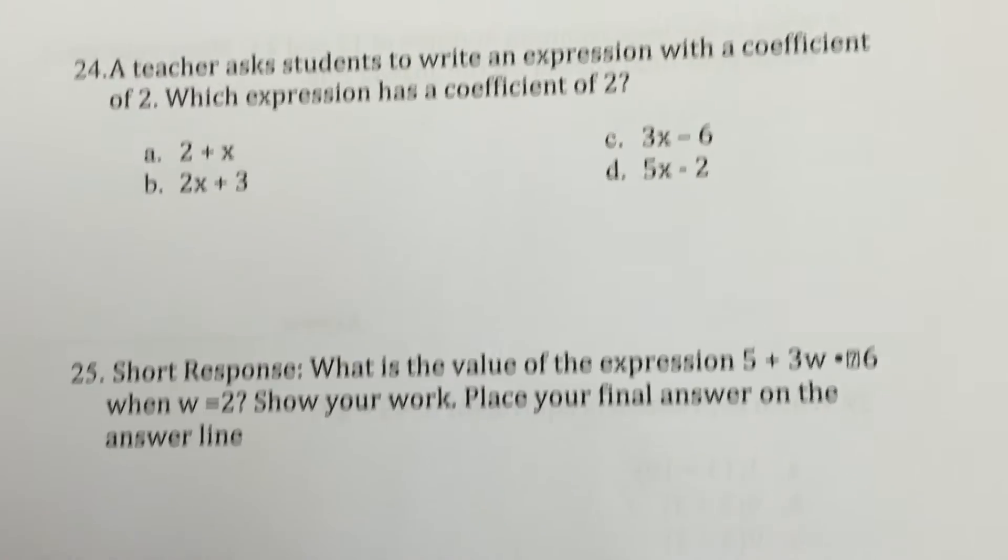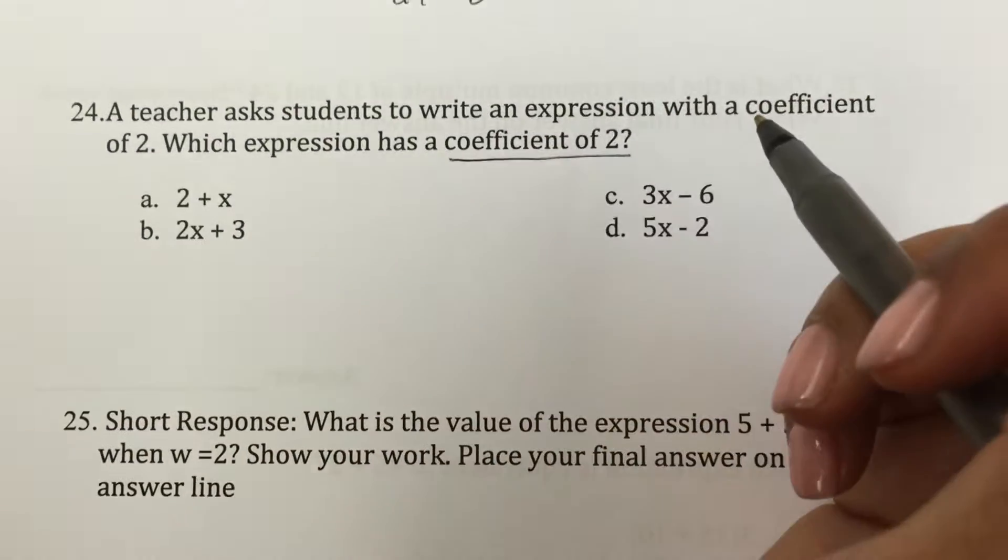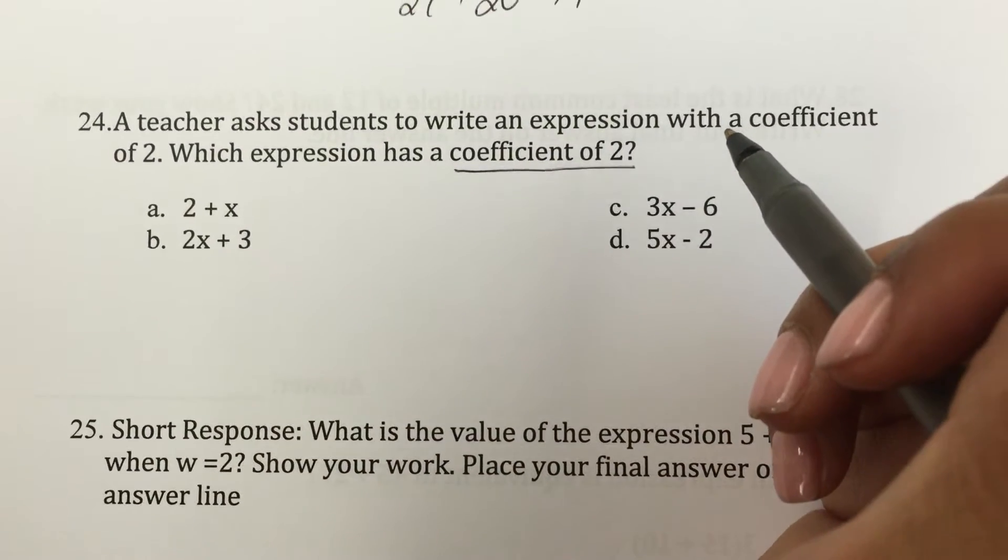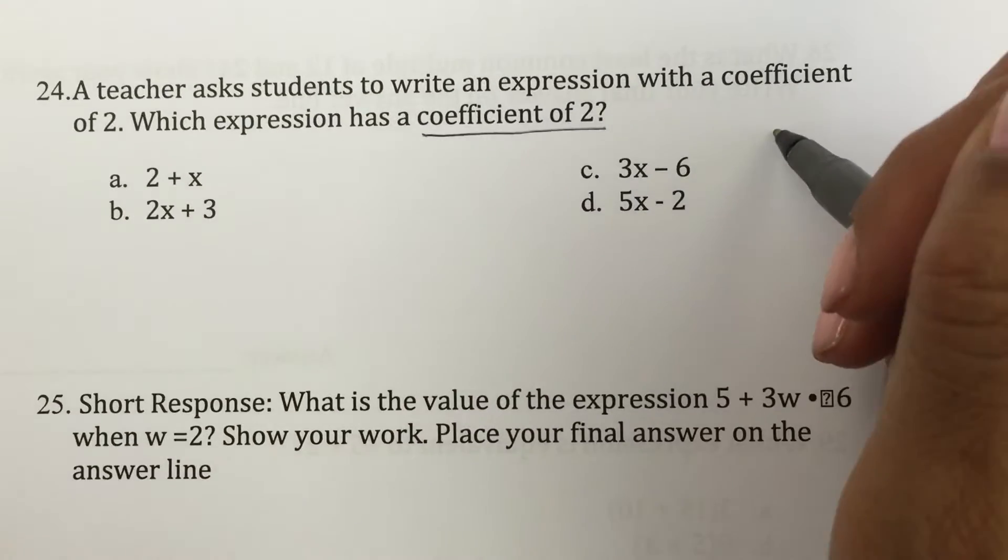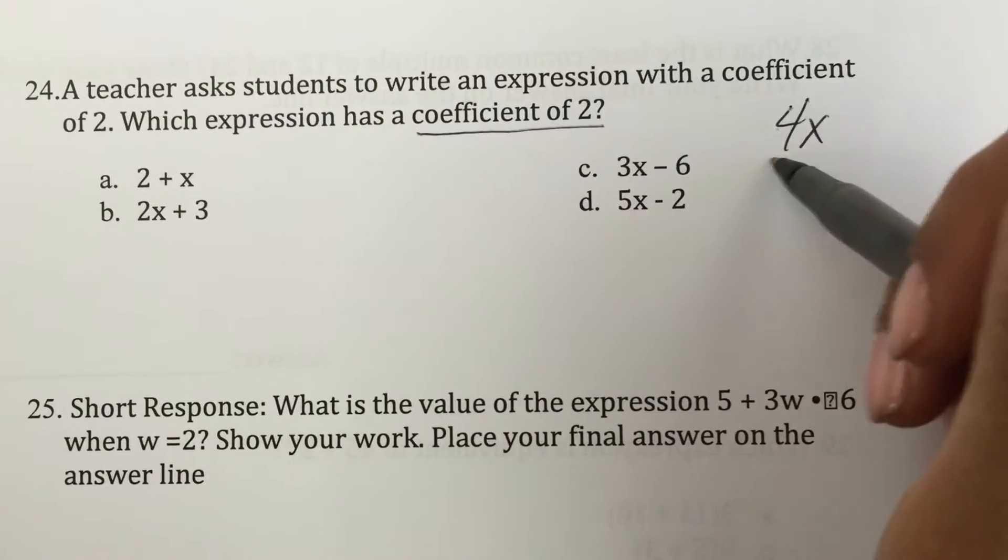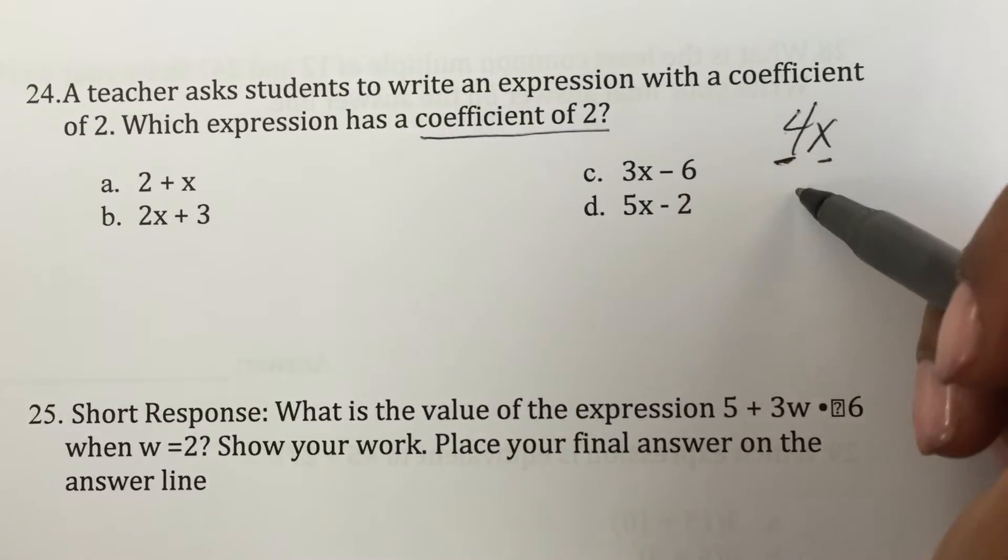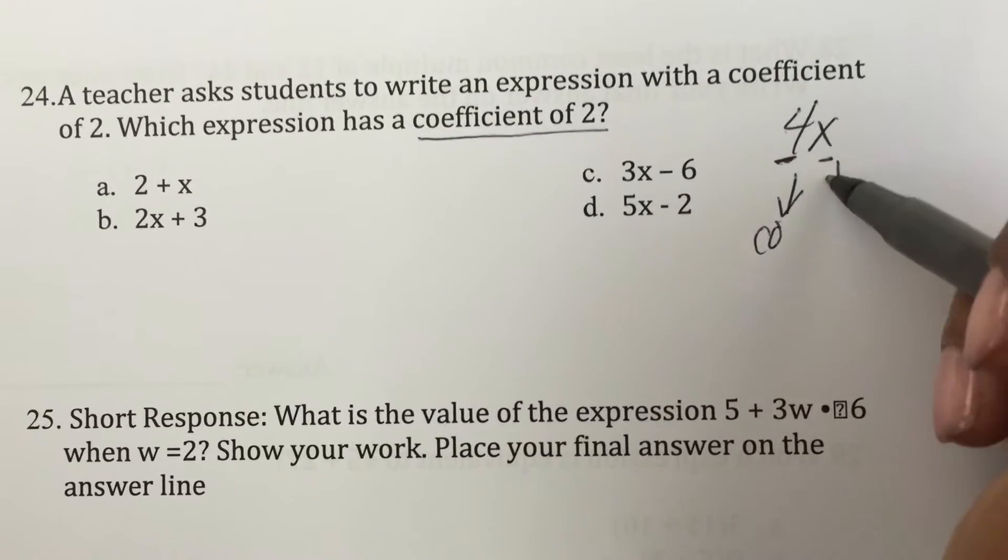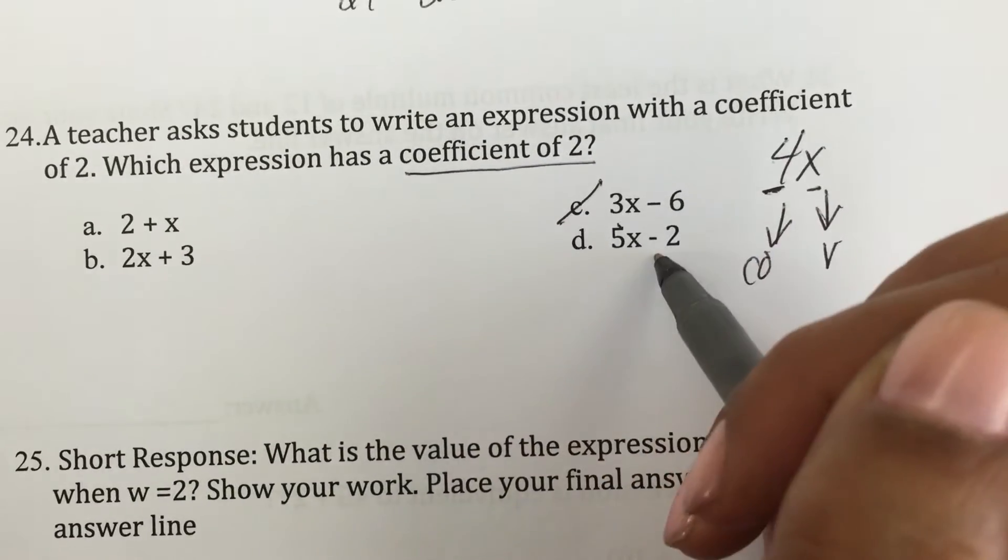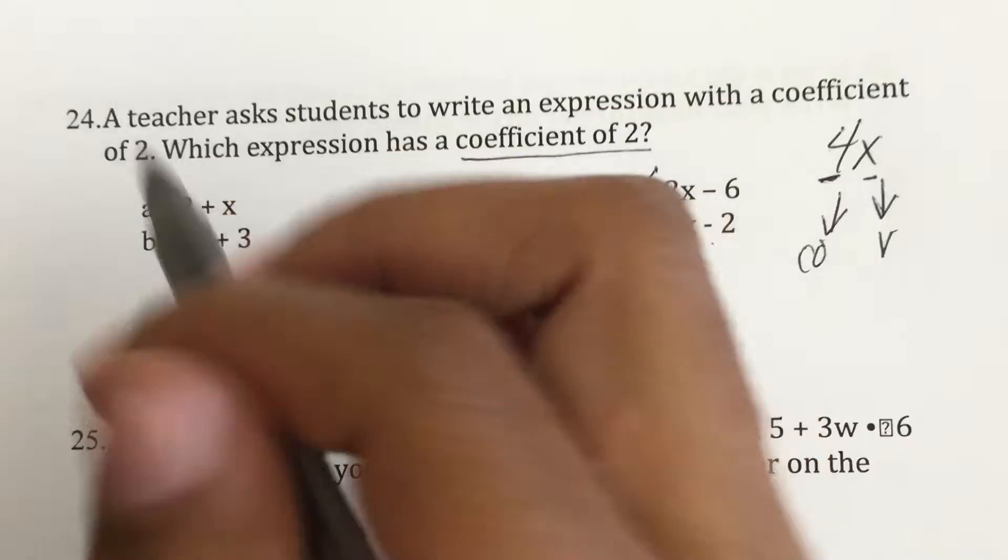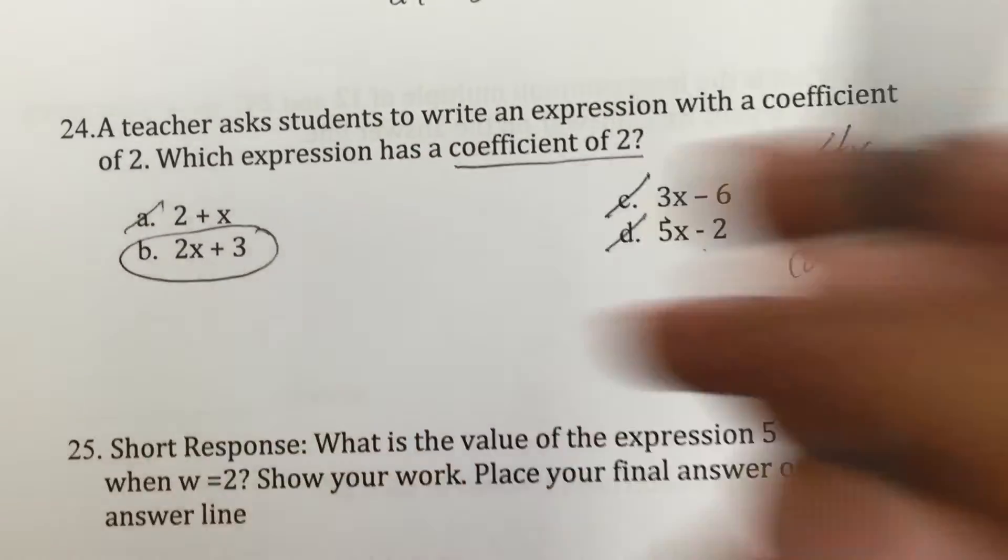Which is the coefficient. It has a coefficient of 2. Coefficient is like a co-partner. So it's someone's partner in the term. So if I have two numbers like this, this is my coefficient. This is my variable. This is my co-partner, my coefficient. That's my variable. So this does not have a coefficient of 2. Neither is this. That is this. It's the only one that has a coefficient of 2.